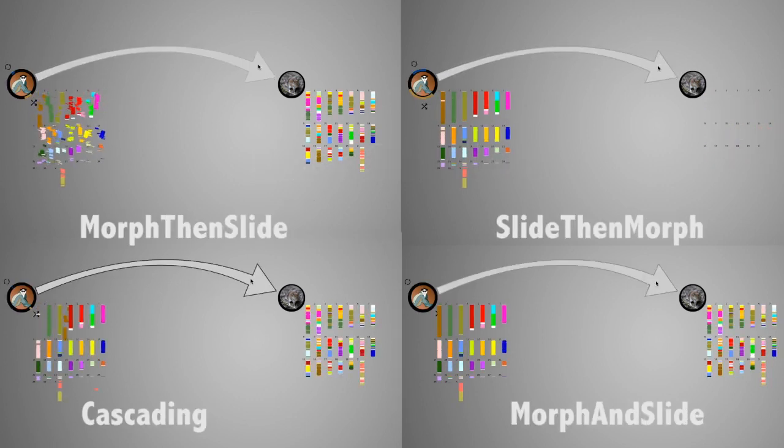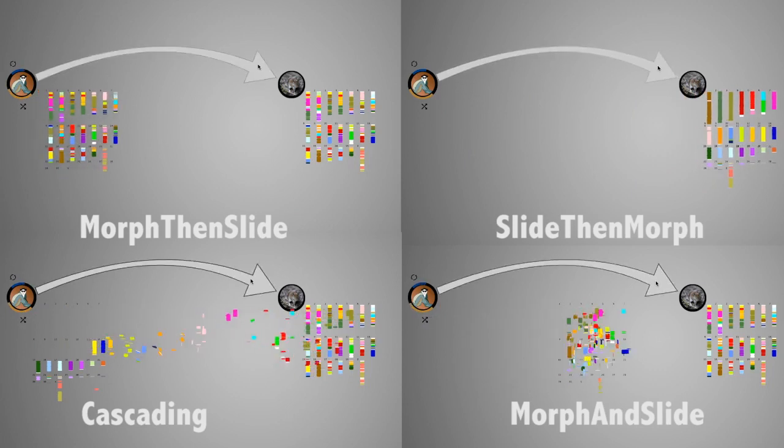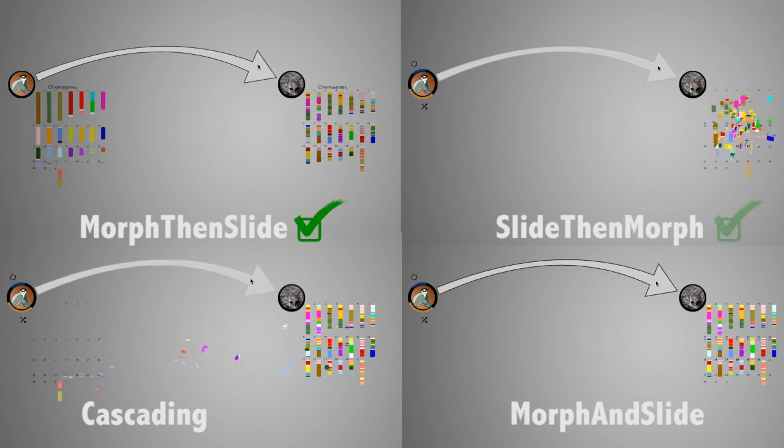Similarly, we tested different animation styles for genomic chromothripsis events. Users preferred the morph-then-slide and slide-then-morph styles.